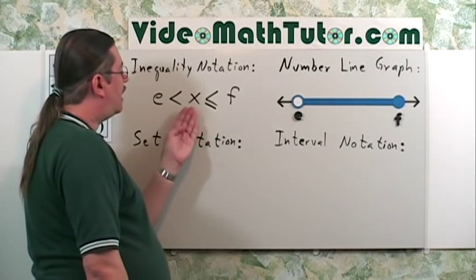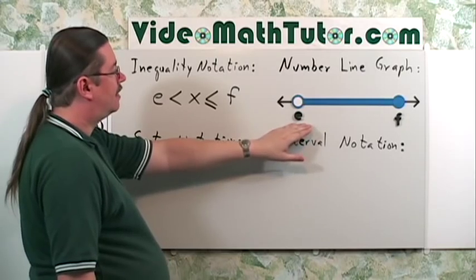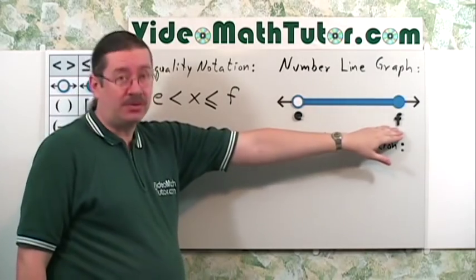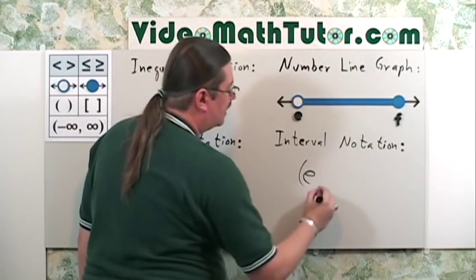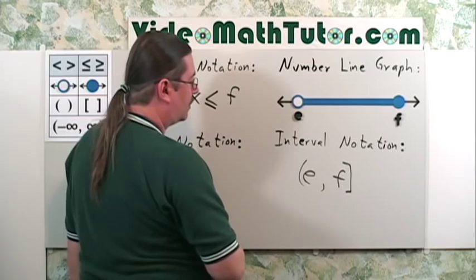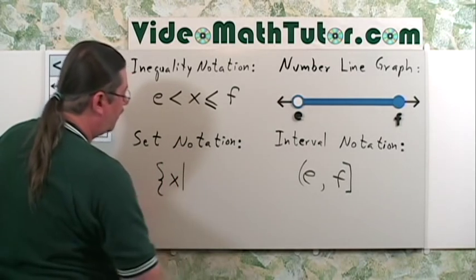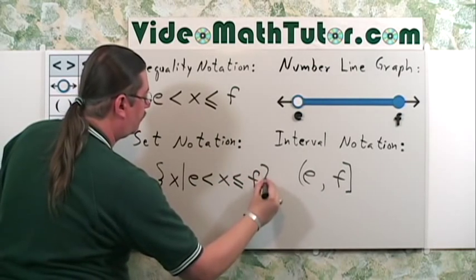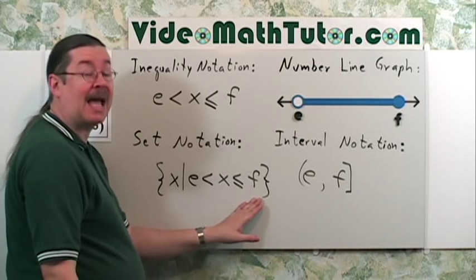This inequality says x is in between e and f and includes f. The number line shows all values shaded between e and f: e is an open dot, f is a closed dot. For interval notation, use a parenthesis at e and a square bracket at f. For set notation: the set of all x's such that x is in between e and f and includes f.